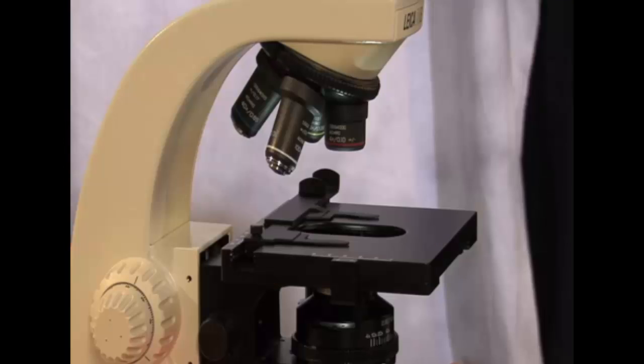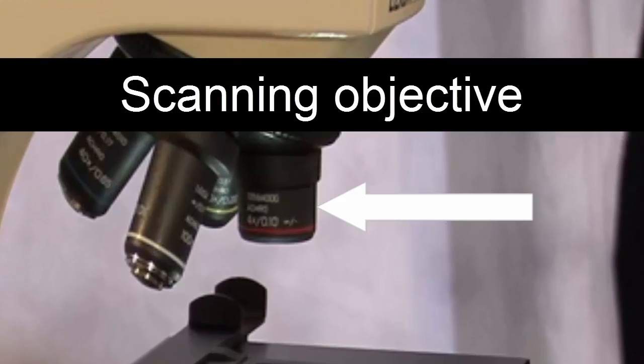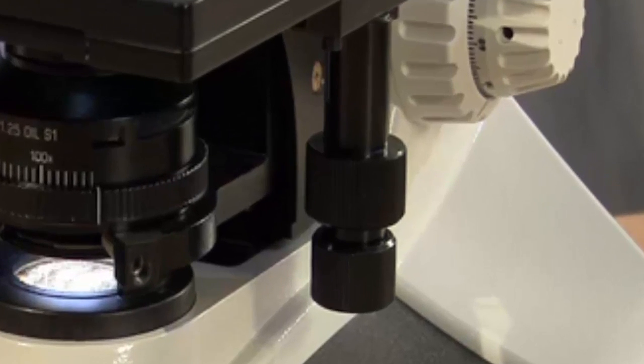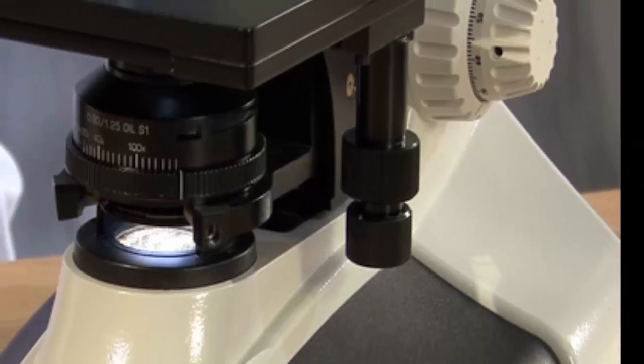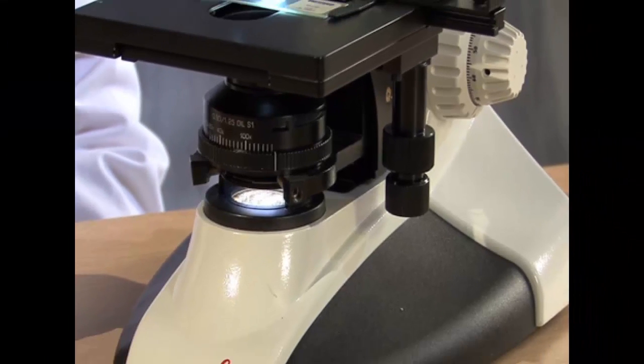Next, make sure the stage is in its lowest position and that the scanning objective is in place. Find the mechanical stage knobs and move the stage forward to allow room to place the microscope slide onto the stage.